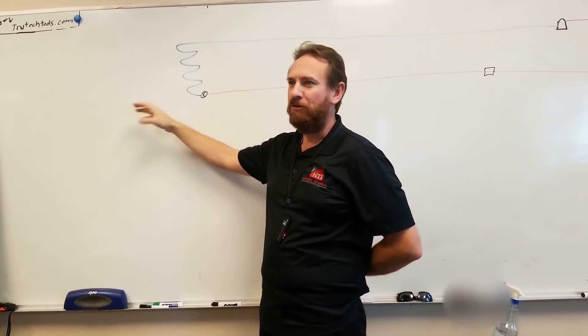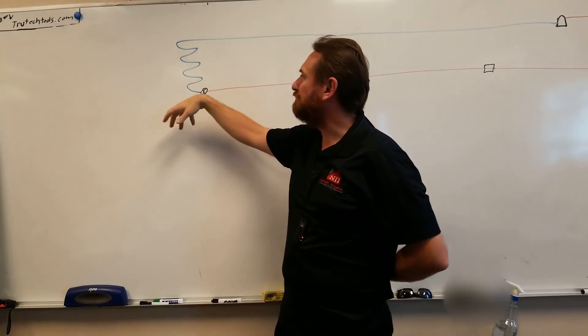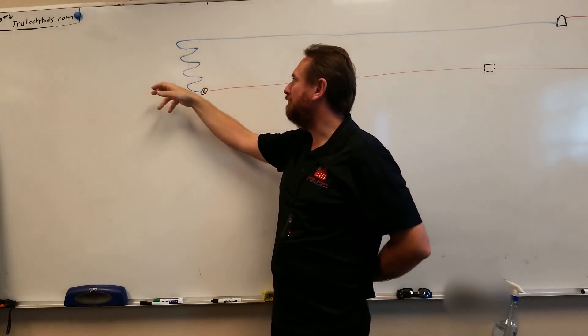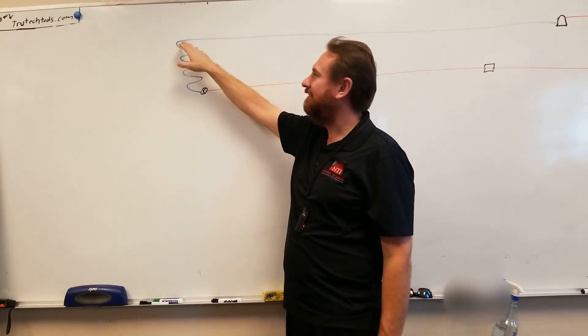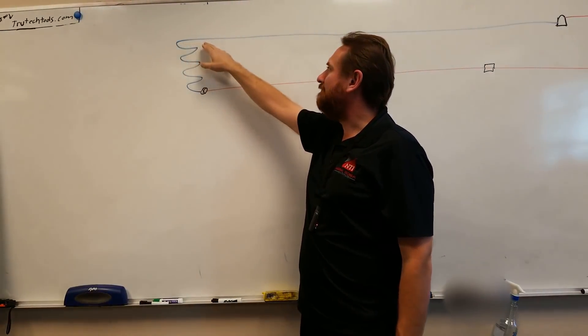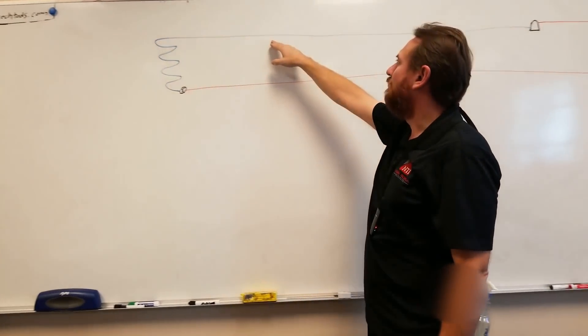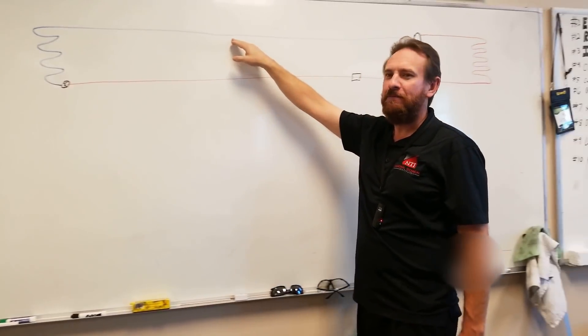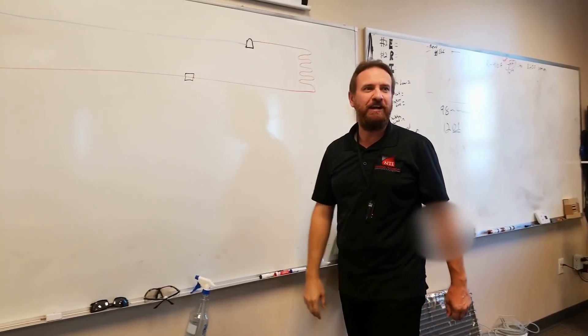So we absorb heat from the air into the lower temperature refrigerant. The refrigerant boils from a liquid to a vapor — the heat is hidden, it's latent heat. Then after that we superheat that vapor, and we have a superheated vapor going all the way back to the compressor.